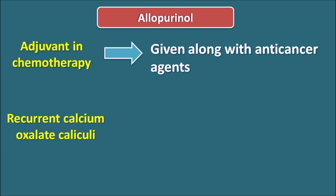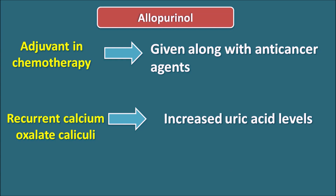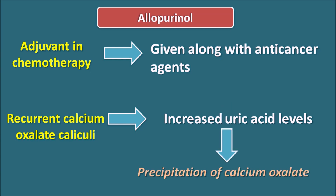Allopurinol can also be used in recurrent calcium oxalate calculi. In such patients, increased uric acid levels may cause precipitation of calcium oxalate crystals in the urine. Allopurinol can control uric acid levels, thereby controlling the precipitation of calcium oxalate crystals.